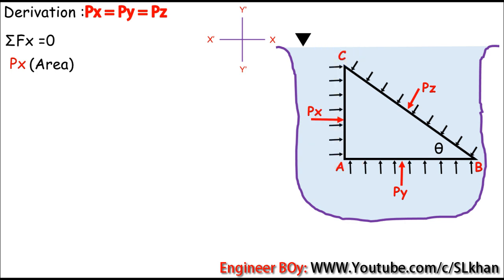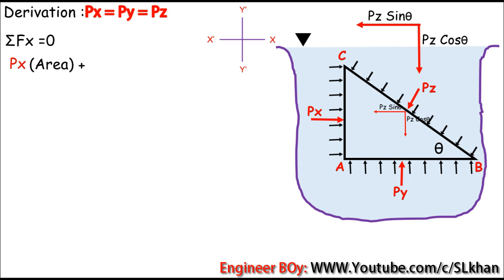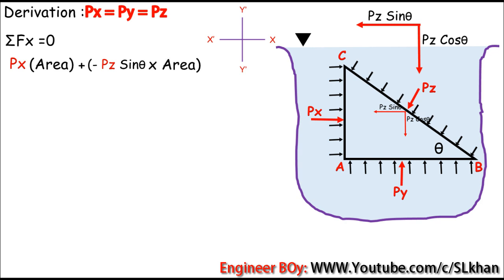PX times the area of AC represents the force in the horizontal direction acting on surface AC. Now, PZ should have two components: a vertical component and a horizontal component. The horizontal component is PZ sine theta, and the vertical component is PZ cos theta. We can also include PZ sine theta in the summation of forces in X direction. Since PZ sine theta acts in the negative X direction, we take it as minus PZ sine theta, multiplied by the area to convert it to force.